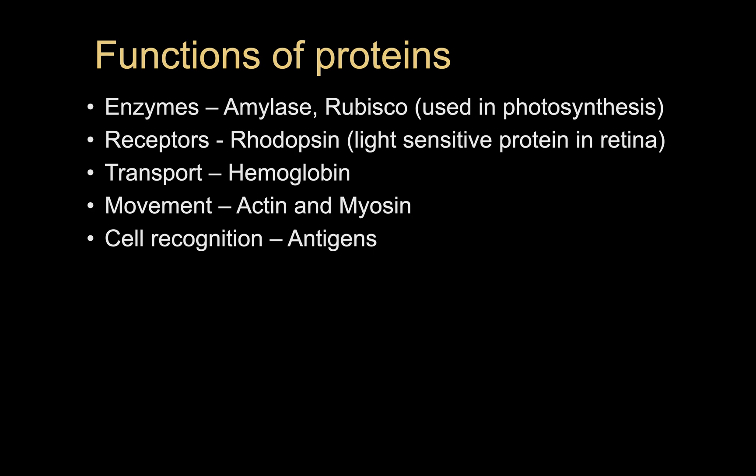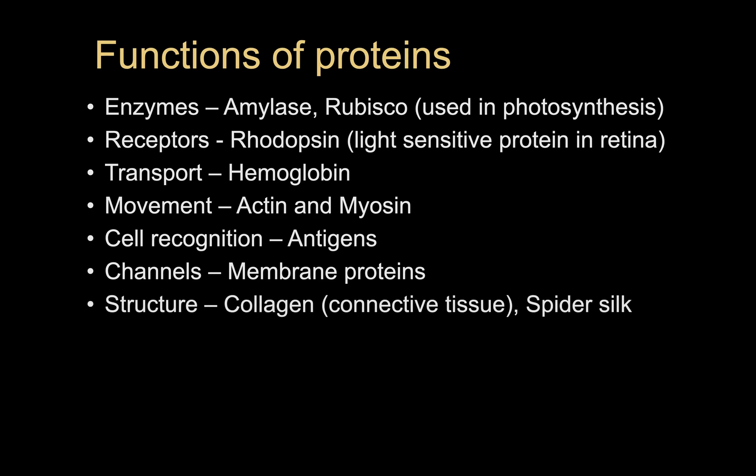Cell recognition would involve proteins that we call antigens. And if you've studied membrane transport, you will know about channel proteins or protein pumps, such as that that involves ATP in order to move sodium and potassium ions. We also have a lot of structural uses for proteins, namely collagen that is found in connective tissue. And also spiders make a particular kind of protein to weave their webs, and that is known as spider silk.